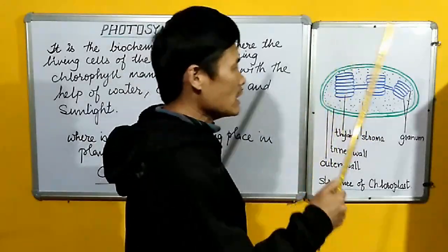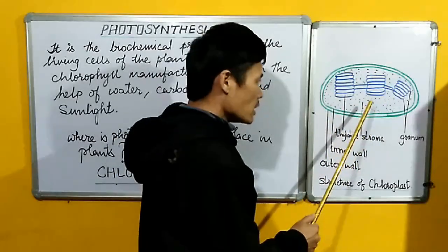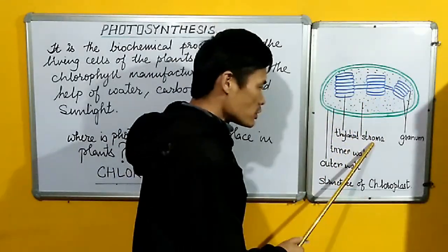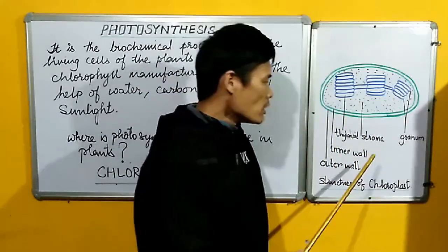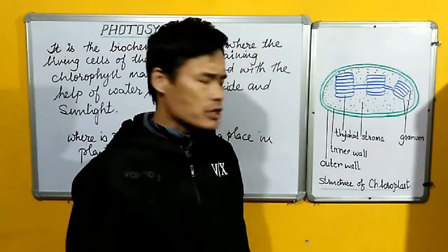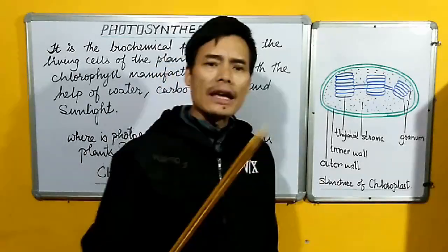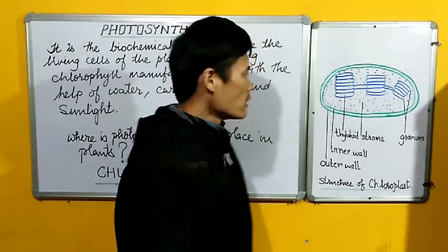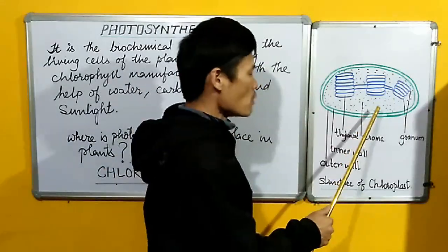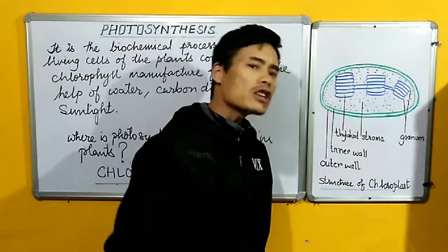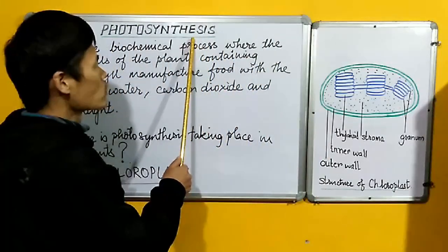Moving on to the next component of the chloroplast — the stroma. This component called stroma is a gel-like matrix. The stroma contains a lot of enzymes for the chemical reaction of photosynthesis, and here in the stroma the second phase of the chemical reaction takes place to complete photosynthesis.